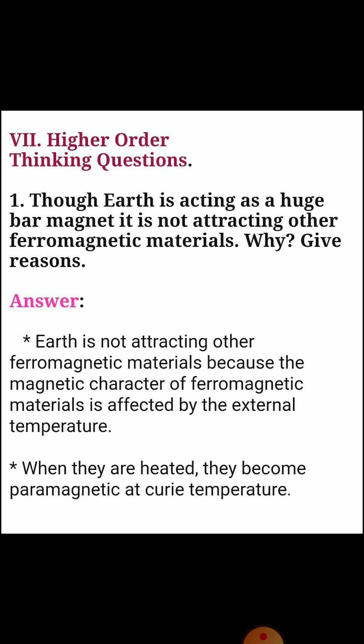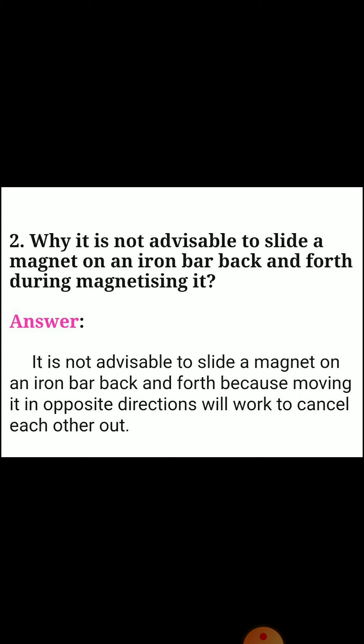Section seven: higher order thinking questions. First one: though earth is acting as a huge bar magnet, it is not attracting other ferromagnetic materials — why? Answer: earth is not attracting other ferromagnetic materials because the magnetic character of ferromagnetic materials is affected by external temperature. When they are heated, they become paramagnetic at the Curie temperature. Second one: why is it not advisable to slide a magnet on an iron bar back and forth during magnetizing? Answer: it is not advisable because moving it in opposite directions will cause the effects to cancel each other out.